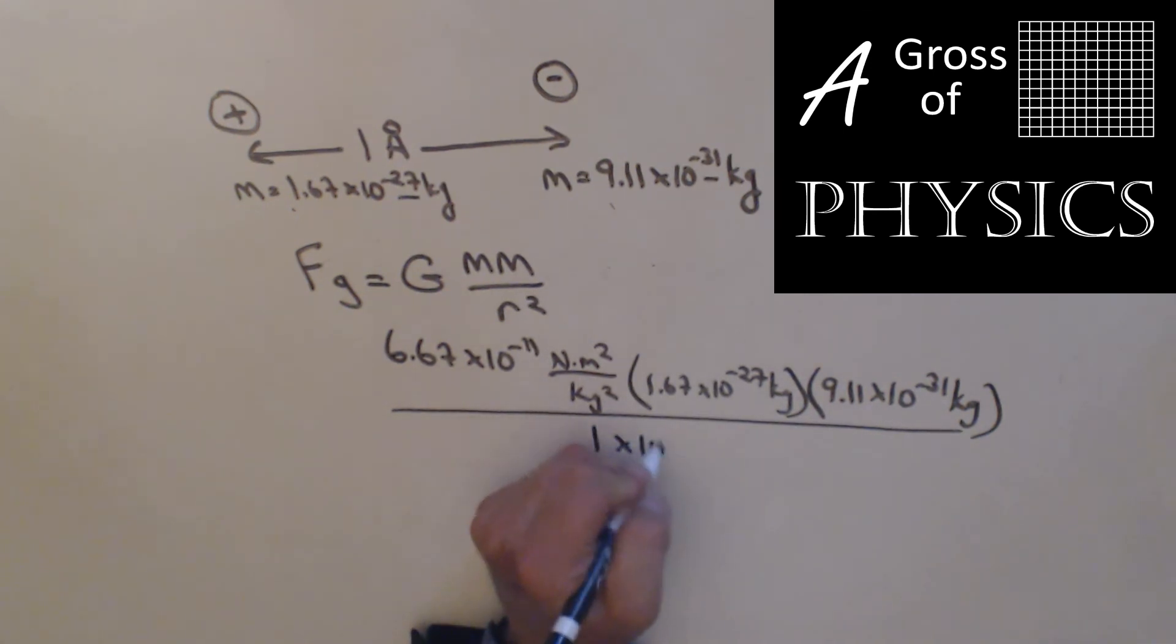What's an angstrom? It's 1 times 10 to the negative 10 meters. The angstrom replaces the 10 to the negative 10 and the meters. It does double duty, but you have to square it. Let's find Fg between them: 6.67 times 1.67 times 9.11 EE negative 31, we get a really small number, divided by 1 EE negative 10 squared. We have 1 times 10 to the negative 47 Newtons. So although there's gravitational attraction between the proton and electron, it's the electrostatic attraction that's really going to play a larger role in atomic stability.